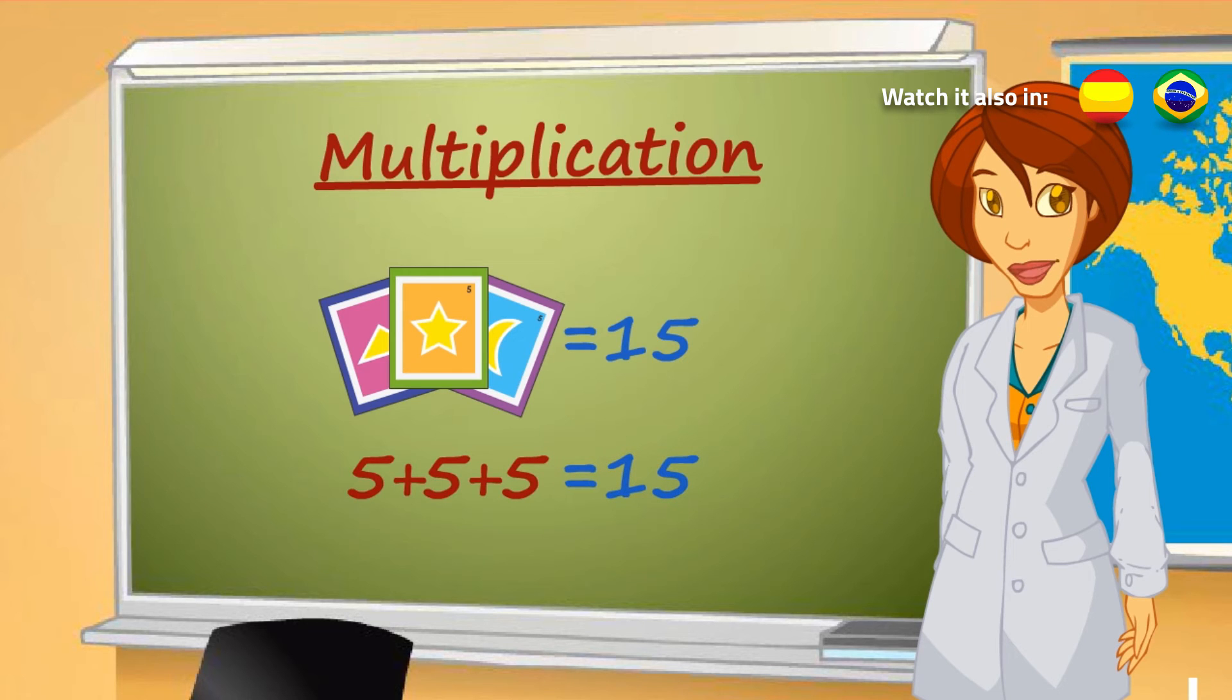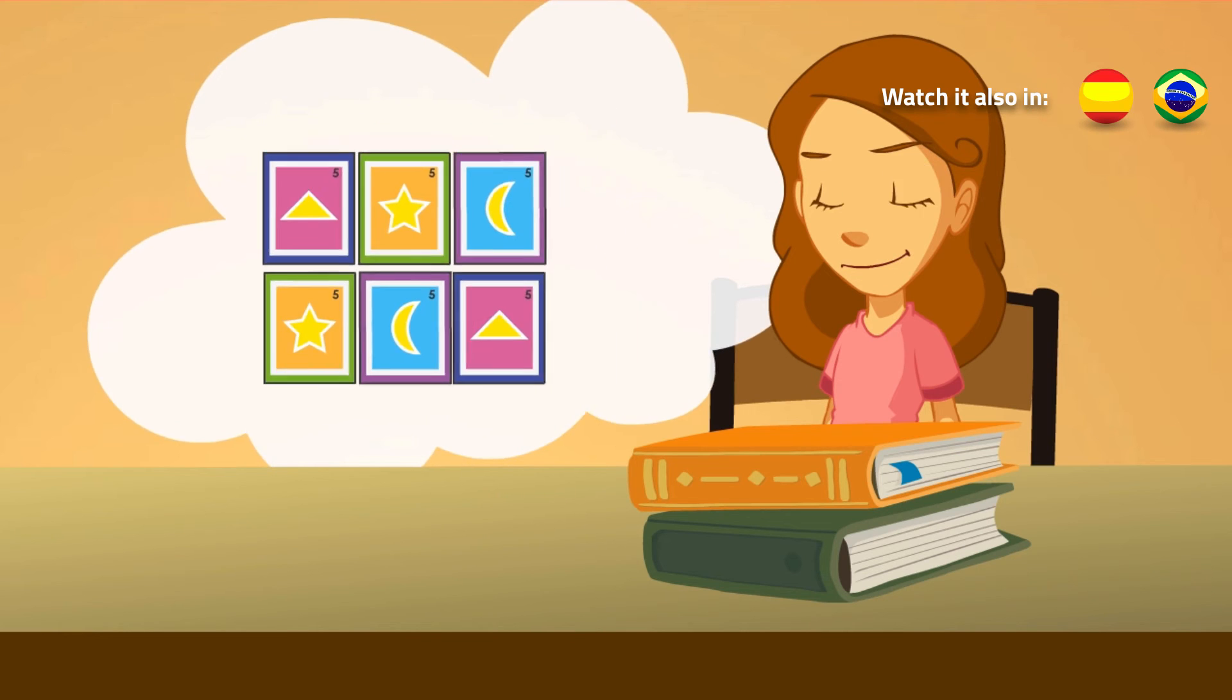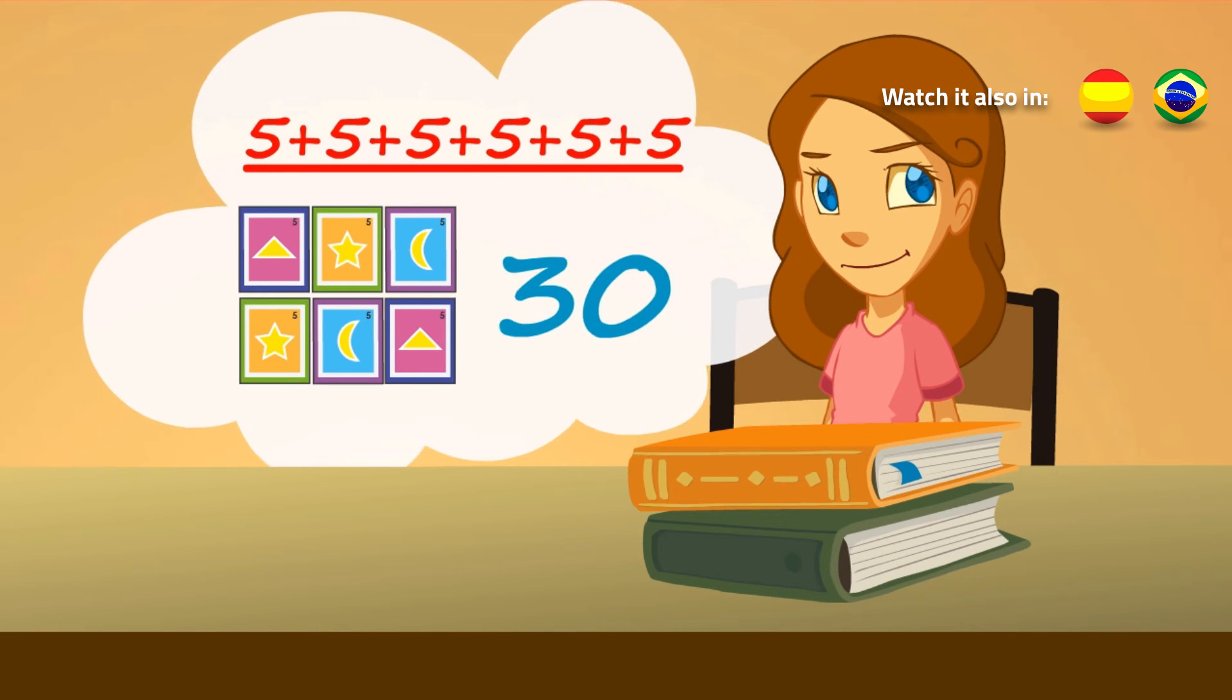That is, you repeated number five three times. Then we did the same, but with six packages. We repeated six times number five, and we got 30.